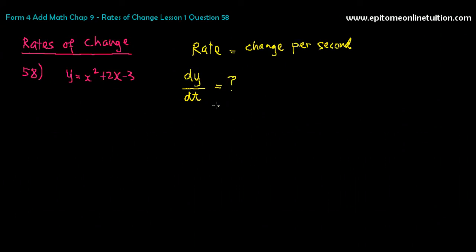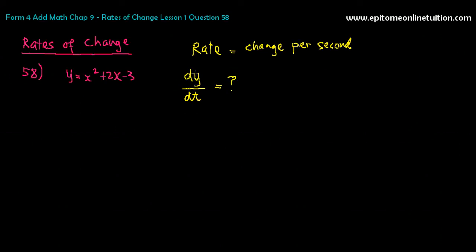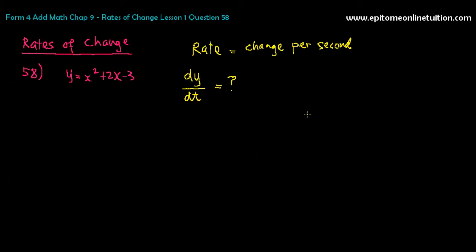In rates of change, you need to extract three pieces of information from the question. You need to extract three derivatives: dy/d-something, d-something/d-something, and d-something/d-something. You are supposed to have one of them as the unknown. So the first one from the question is: find the rate of change in the value of y, which means find dy/dt.